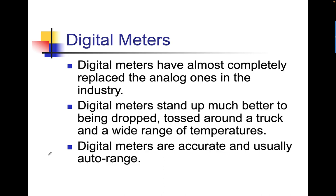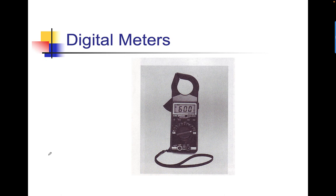Digital meters have almost completely replaced the analog ones in the industry. Digital meters stand up much better to being dropped and tossed around a truck and have a wide range of temperatures that they can work at. Digital meters are more accurate and usually auto-range. This is an example of an older digital meter.